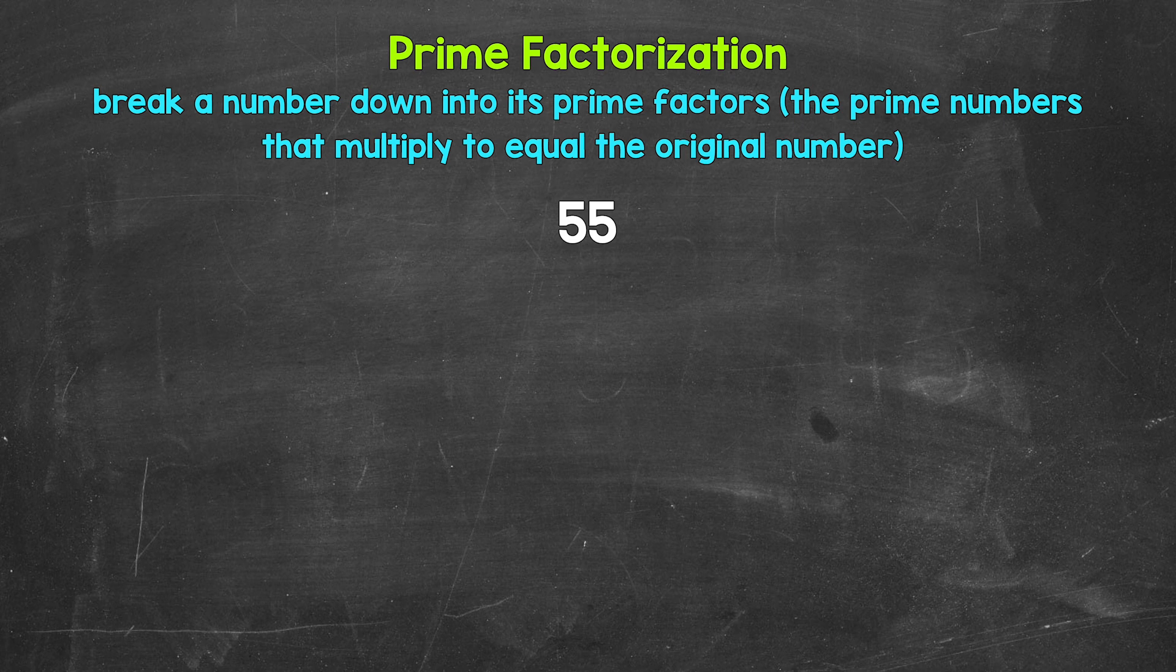We are breaking 55 down into its prime factors, the prime numbers that multiply to equal 55. Taking a look at 55, we need to start breaking this down by thinking of two factors, two numbers that multiply to give us 55.